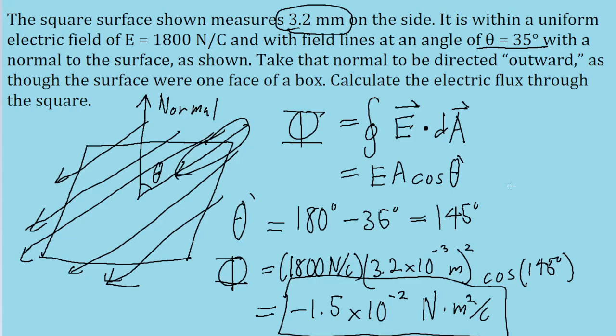But we could still figure out the answer should be negative, because the problem tells us the normal is directed outwards. When dealing with flux and field lines,